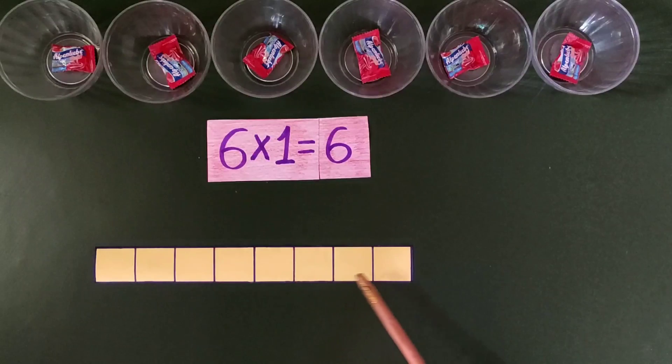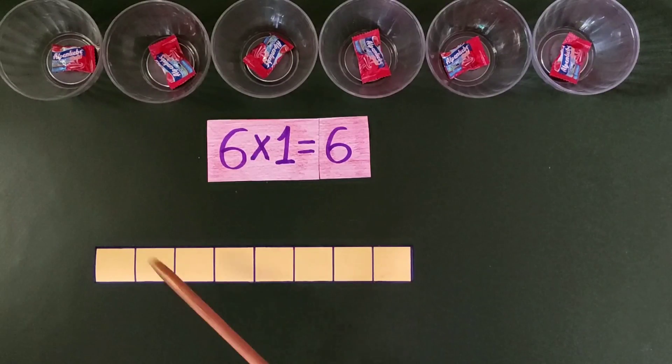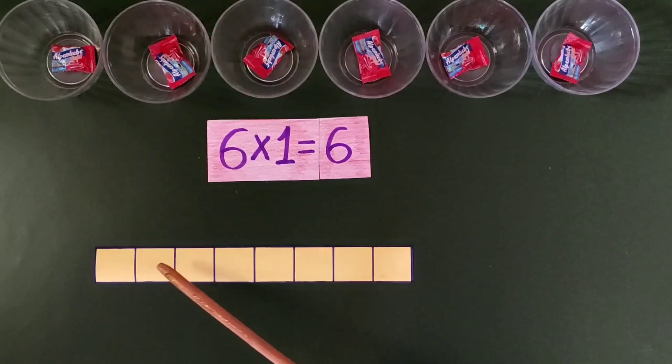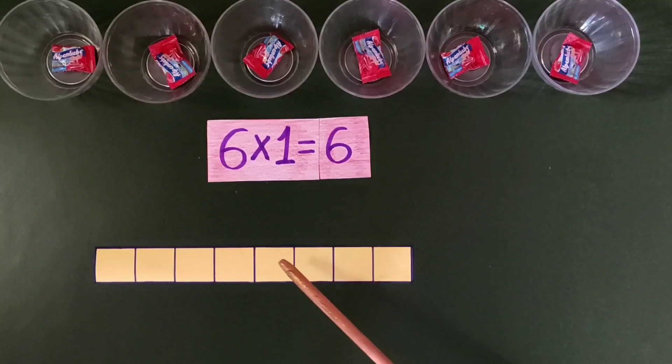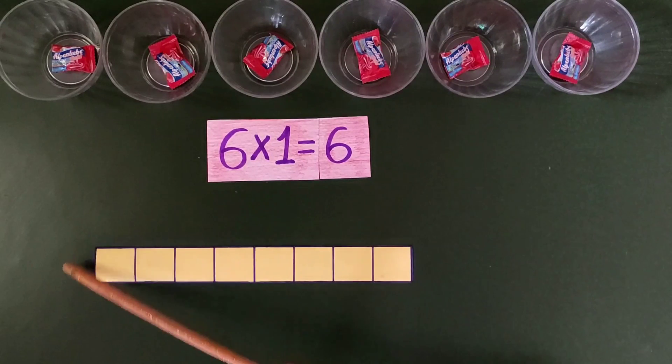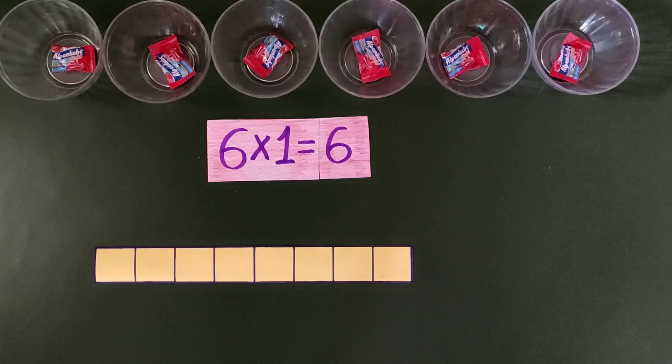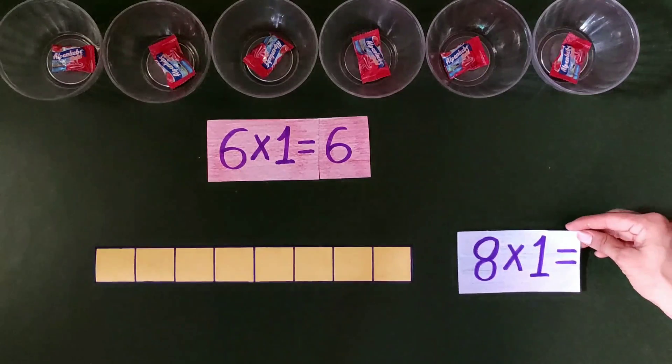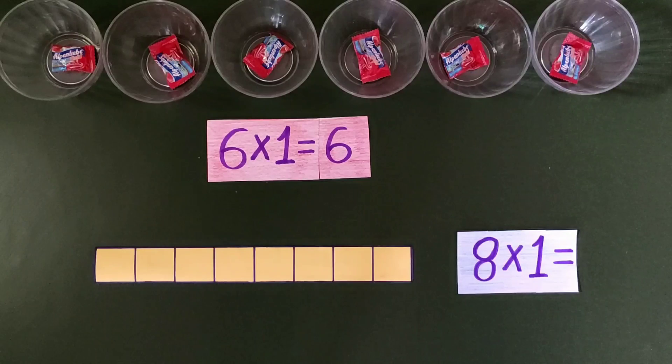And here we are given boxes. Let's count them horizontally. 1, 2, 3, 4, 5, 6, 7 and 8. And vertically we have only one box. So the count of all the boxes is 8. We can put it as 8 multiplied by 1 equals 8.